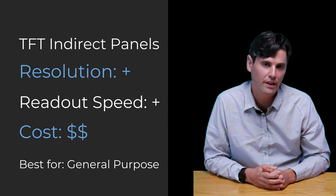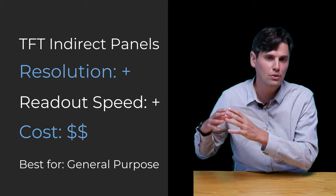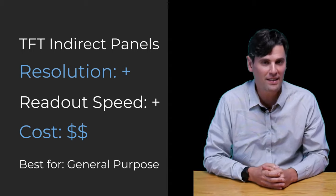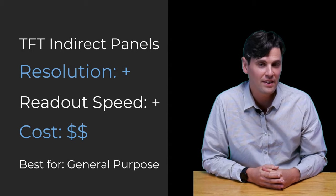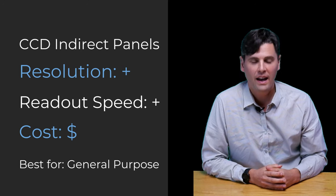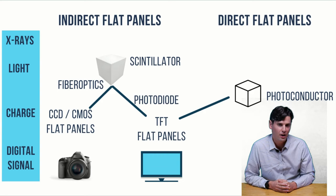For general radiography, the choice is between CCD and TFT arrays. TFT arrays are more common in the field and are more dose-efficient because no photons are lost in the light demagnification process required by CCD-based systems. CCD-based systems are generally a little less expensive than TFT systems. So at a high level, the trade-off is dose efficiency versus expense, with TFT being the more common choice for general radiography.